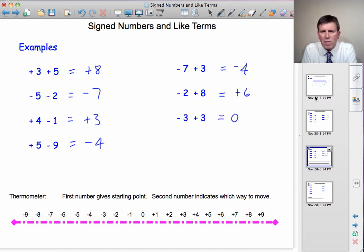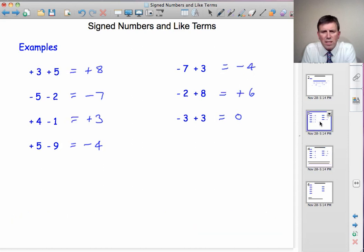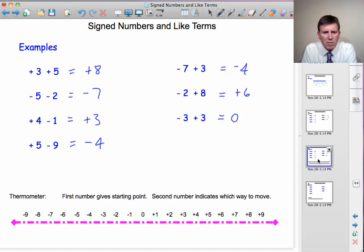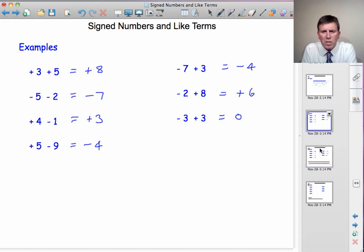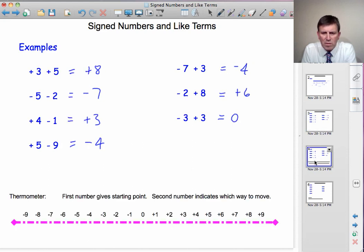And if I just flash back to the previous page, we'll see that the answers are exactly the same. We've got 8, minus 7, 3, minus 4. And there's the 8, minus 7, 3, minus 4. And the right-hand column, minus 4, 6, 0. And we've still got minus 4, 6, 0.